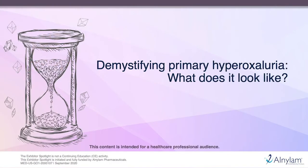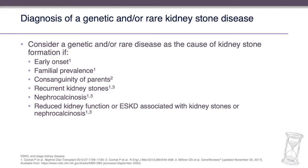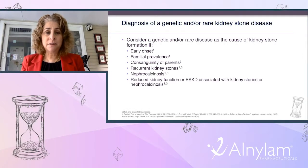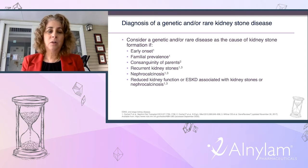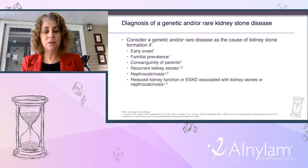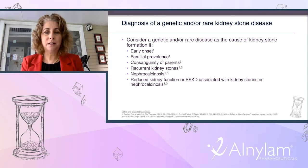In the clinic, we consider a genetic or rare disease as a cause of kidney stones when there is early onset of disease, familial prevalence, consanguinity of the parents, recurrent kidney stones, or nephrocalcinosis. Additionally, if a patient with kidney stones presents with reduced kidney function or end-stage renal disease associated with kidney stones or nephrocalcinosis, it is important to consider a genetic cause.